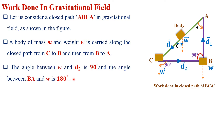The angle between w and d2 is 90 degrees, and the angle between BA and w is 180 degrees. When the object is displaced from B to A, the angle between d1 and w is 180 degrees because they are anti-parallel — d1 is in one direction and w is in the opposite direction.